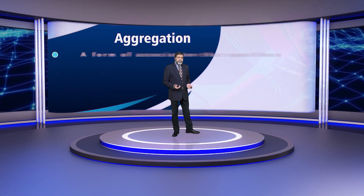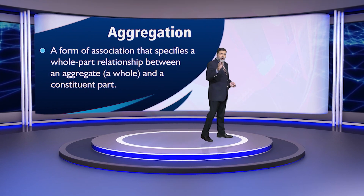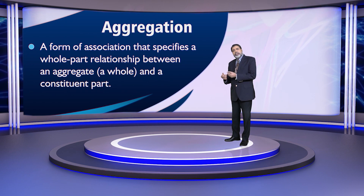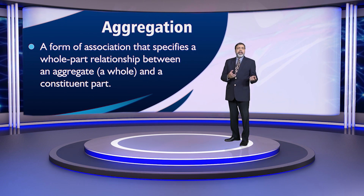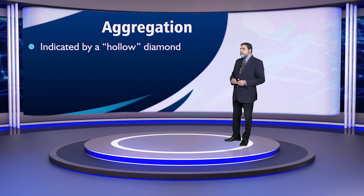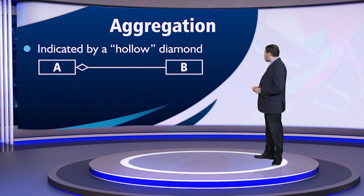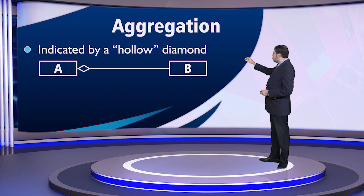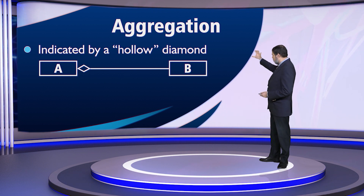Aggregation is a form of association that specifies a whole-part kind of relationship between an aggregate, which is the whole, and a constant part. This whole-part relationship is indicated by a hollow diamond at one end. A is the whole and B is the part — so jis taraf wo diamond hai woh whole hai aur doosra part hai.